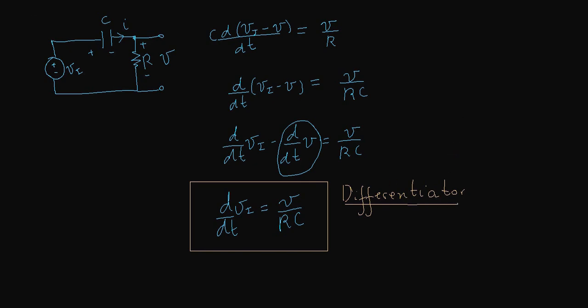The problem with this approach is that it constrains the values of R and C. In one case RC has to be large, and in the other case RC has to be small. Let's see if we can remove those constraints by using operational amplifiers.